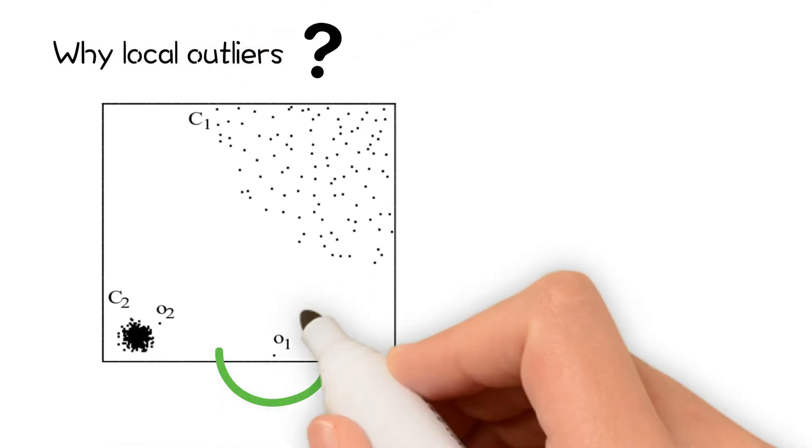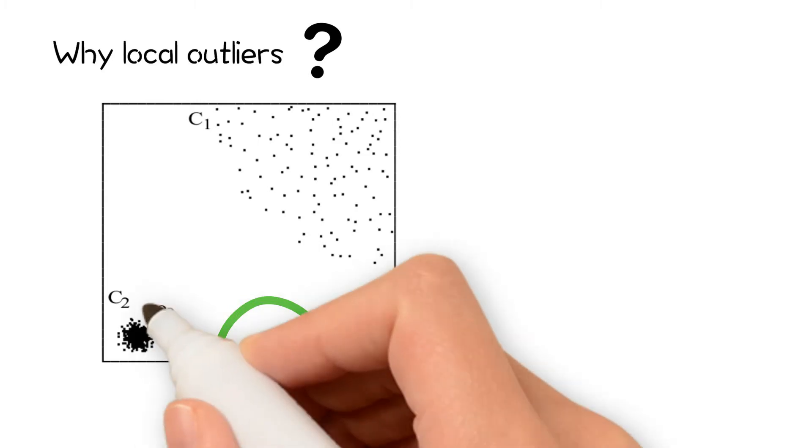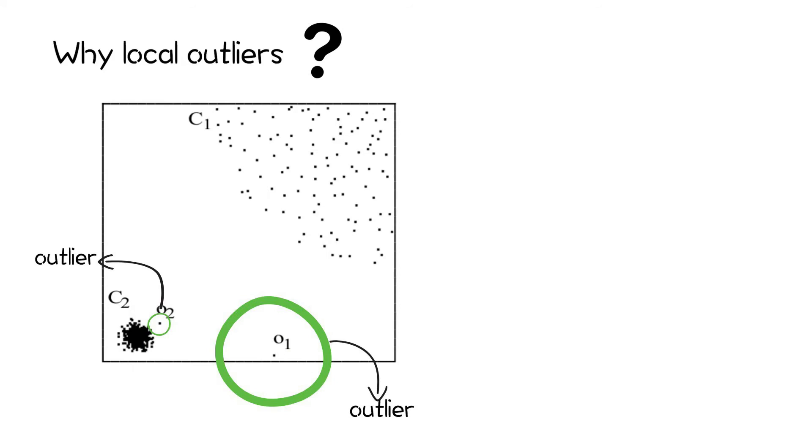Global outliers are far from all the other points in a dataset, but local outliers are only far from nearby points in one area of the dataset. Similar points would be considered inliers in another part of the dataset.